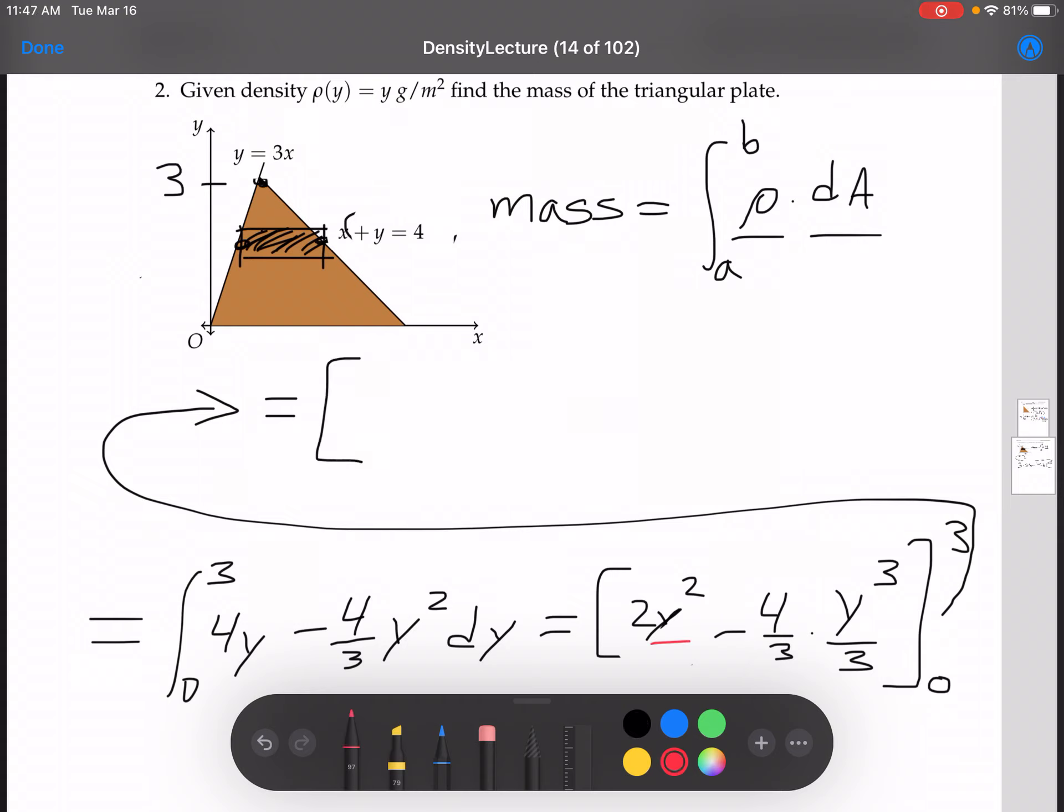Now notice we can cancel here, so we have a 2 there. And notice that there's a y in each of these terms, so when we plug in the 0, we're going to get 0. So we don't need to worry about that one.